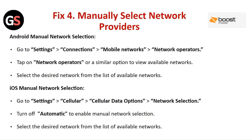Fix 4: Manually select the network provider. For Android, go to Settings, then Connections, then Mobile Network or Network Operators. Tap on Network Operators to view available networks and select the desired network. For iOS, go to Settings, then Cellular, then Cellular Data Options. Select Network Selection and turn off Automatic to enable manual network selection, then select the desired network from the list of available networks.